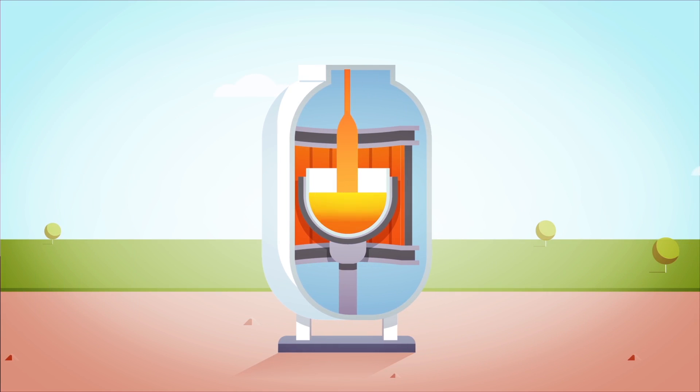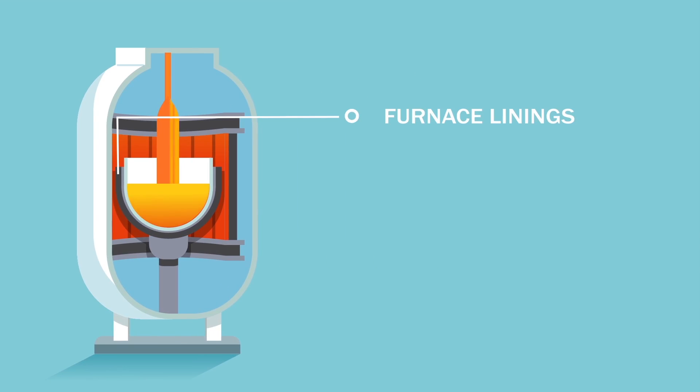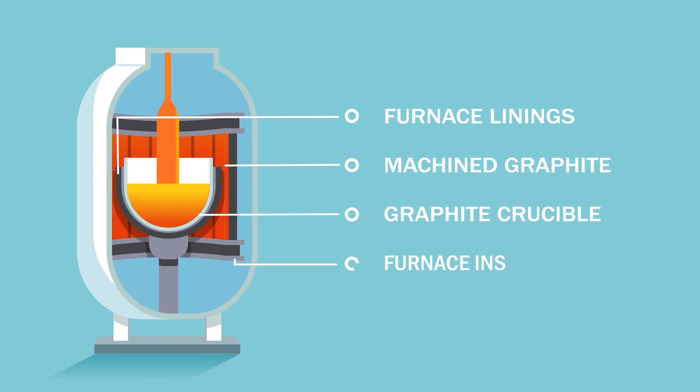Photovoltaic cells' performance depend on the manufacturing process used. This performance can reach 18% of solar energy converted into electricity. Regardless of the process, Mersenne's graphite equipment are furnace linings, machined graphite parts, graphite crucibles, and furnace insulation.